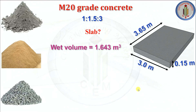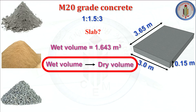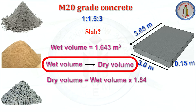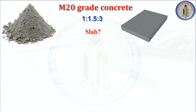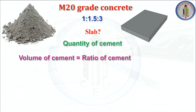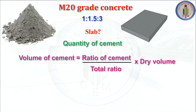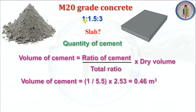We know the wet volume for this slab is 1.643 meter cube. We need to convert wet volume to dry volume. Dry volume equals wet volume multiplied by 1.54, so we get 2.53 meter cube. Now we calculate the quantity of cement. Volume of cement equals ratio of cement divided by total ratio, multiplied by dry volume — that is 1 divided by 5.5 multiplied by 2.53, which equals 0.46 meter cube.